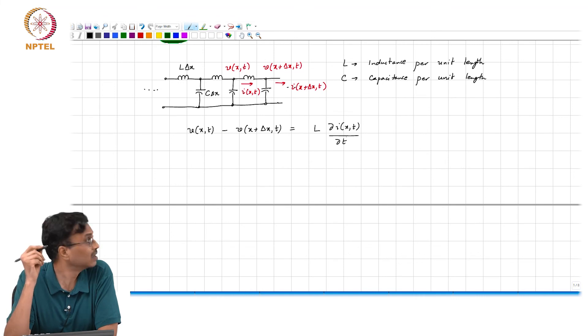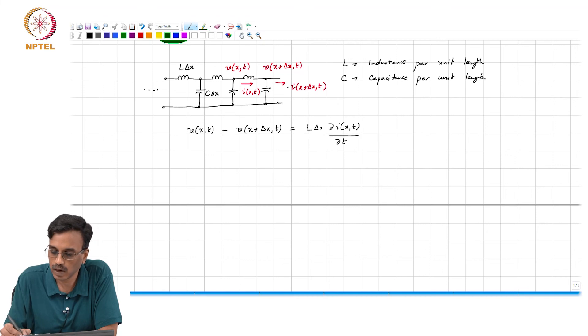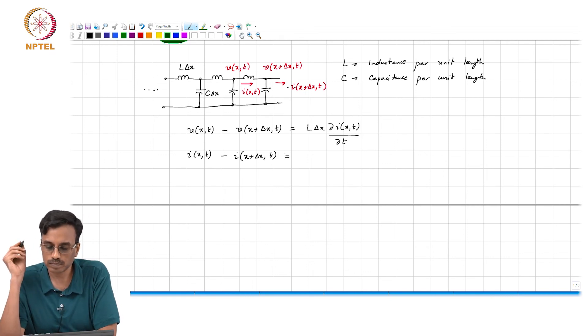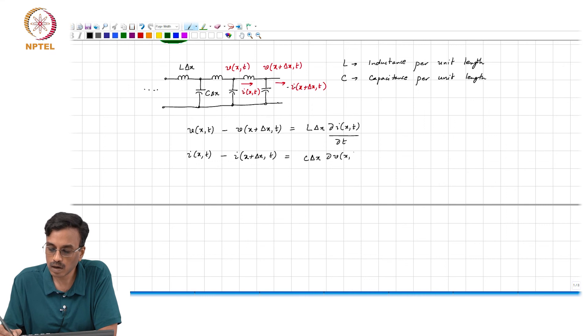To solve this, what do we do? We simply write Kirchhoff's laws and recognize that v of x comma t minus v of x plus delta x comma t is simply the drop across that infinitesimal inductor, which is L times delta x times the partial derivative of i with respect to time. And similarly, i of x comma t minus i of x plus delta x comma t must be equal to C delta x times the partial derivative of v of x comma t with respect to time.